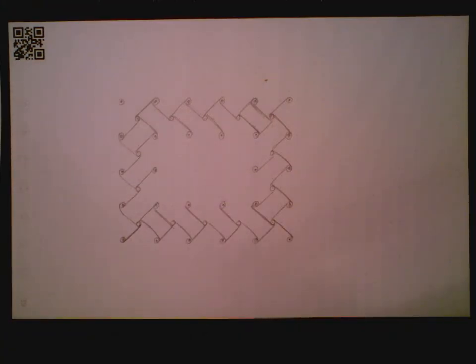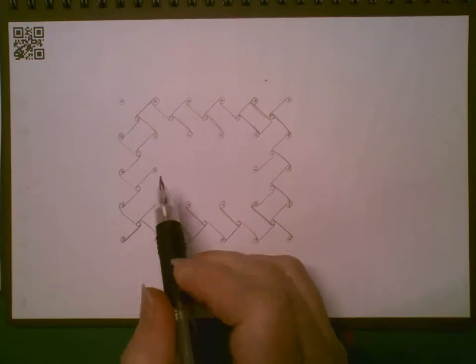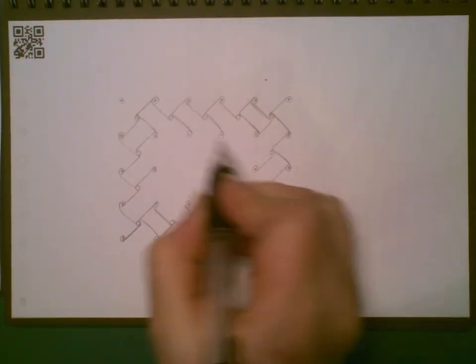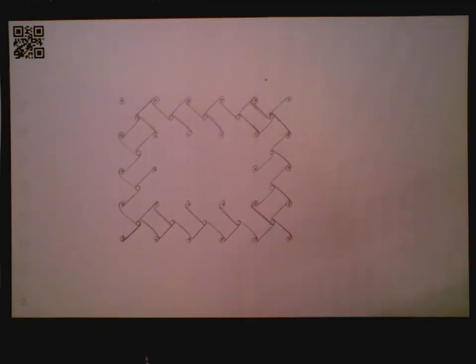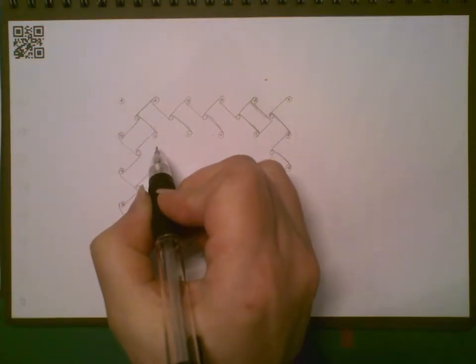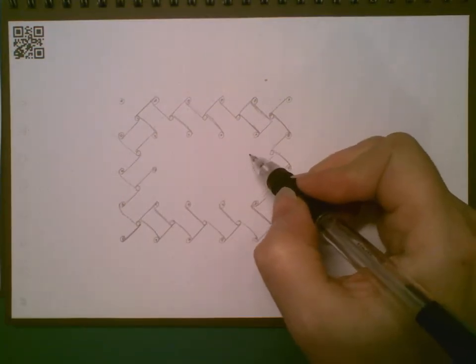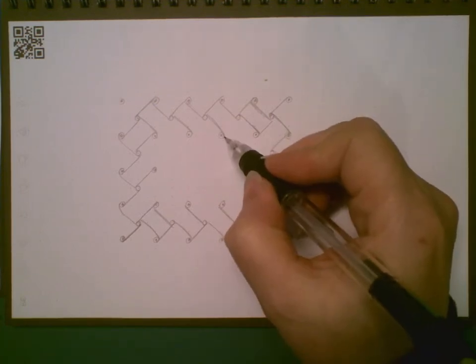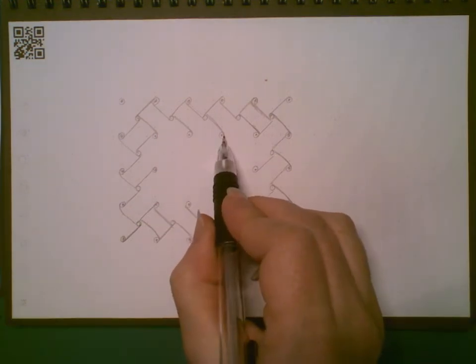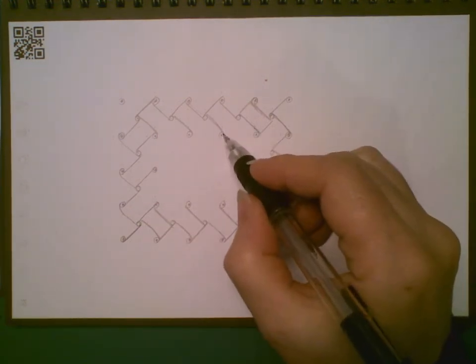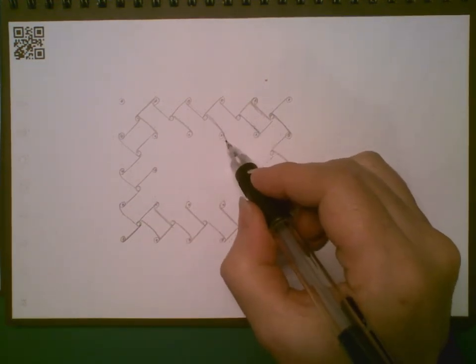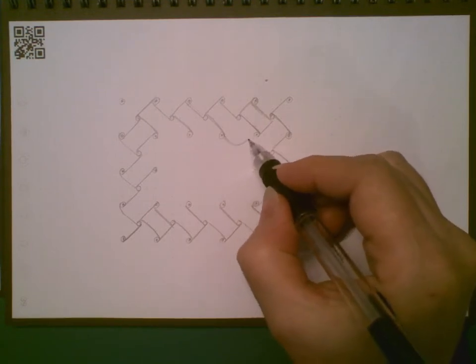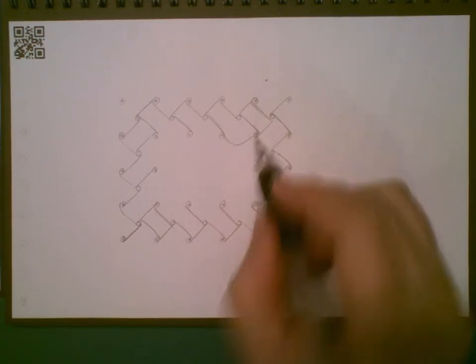Already you can start to see this starting to look like a weave is happening. Next step, we're going to complete the inside of this frame with a series of loops. So I'm going to start right here. The third dot over on the inside of my frame.